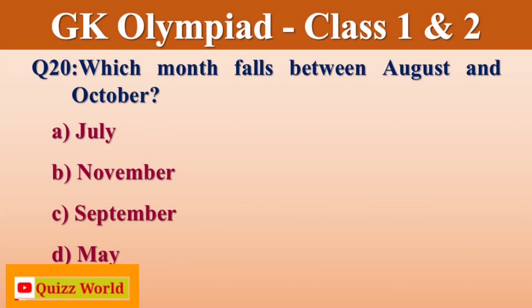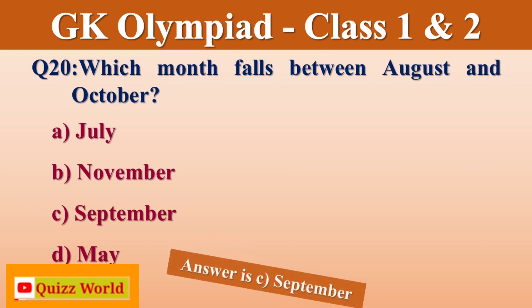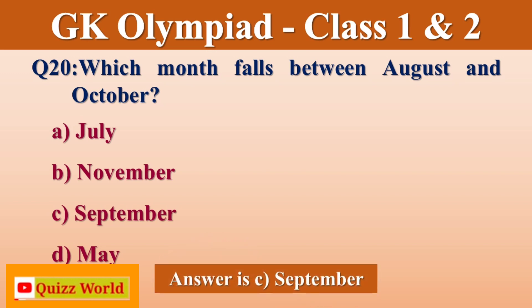Which month falls between August and October? July, November, September, May. Right answer is September.